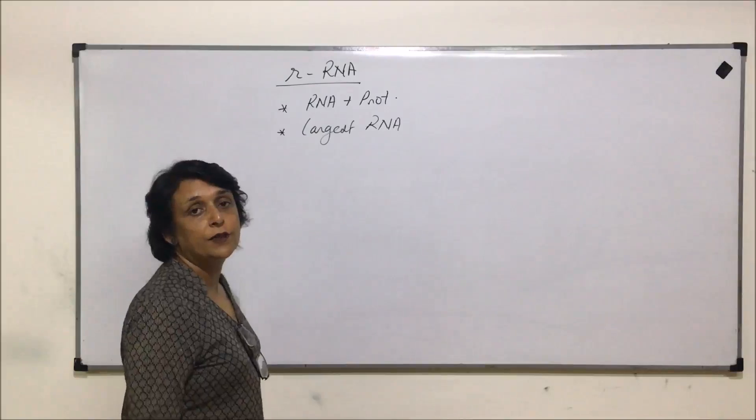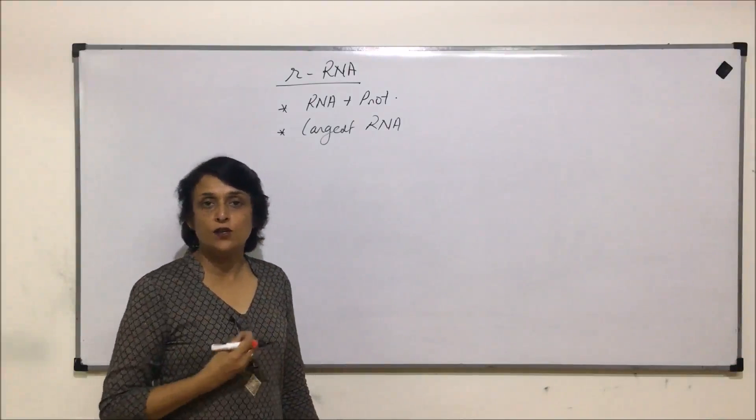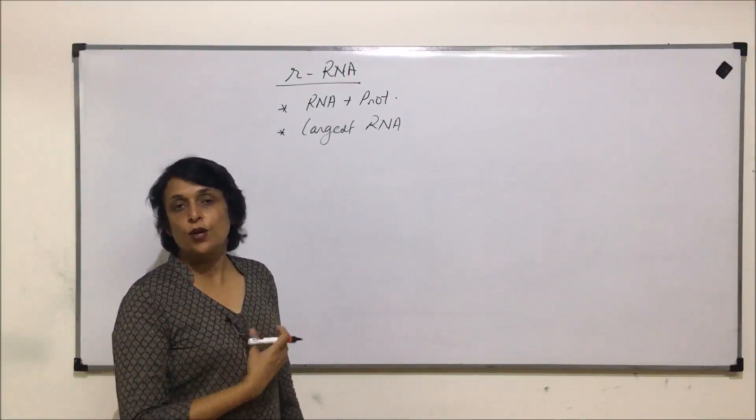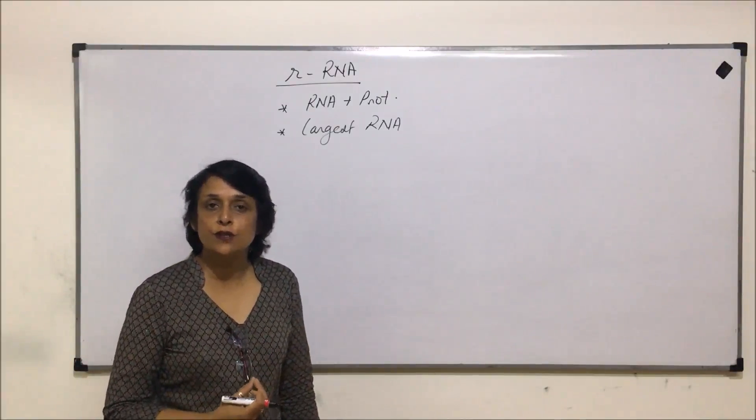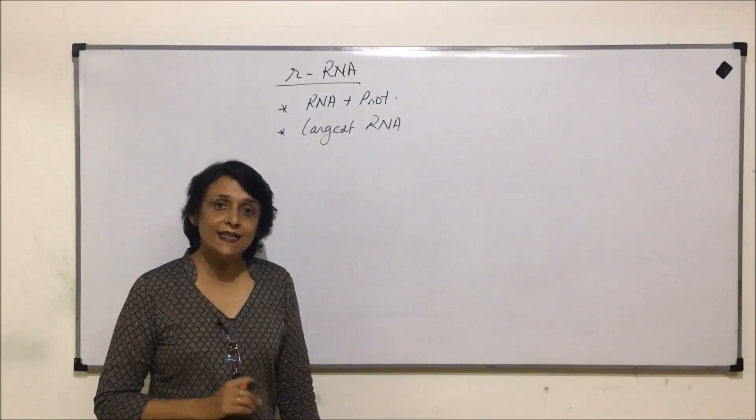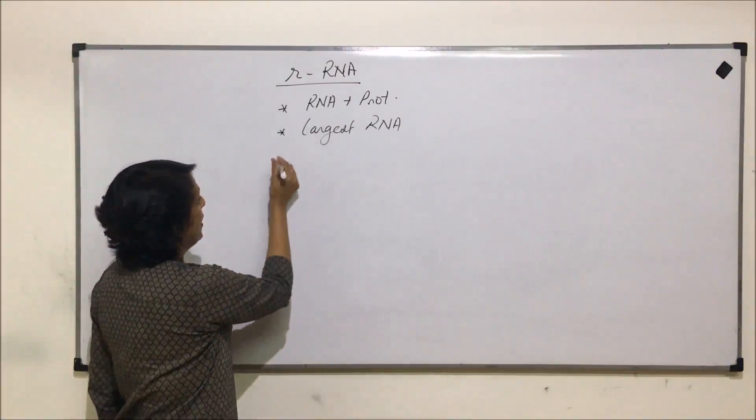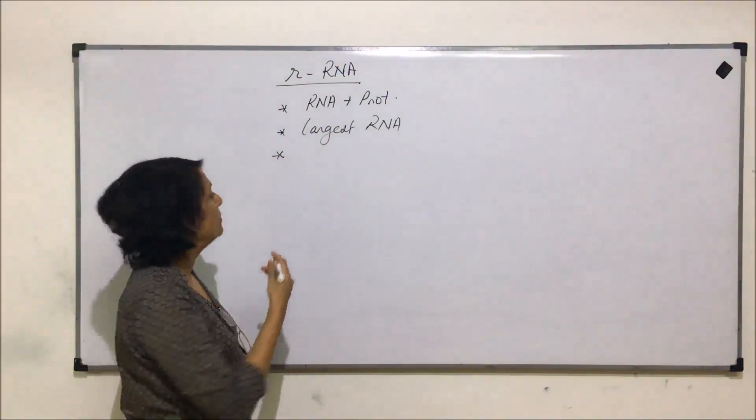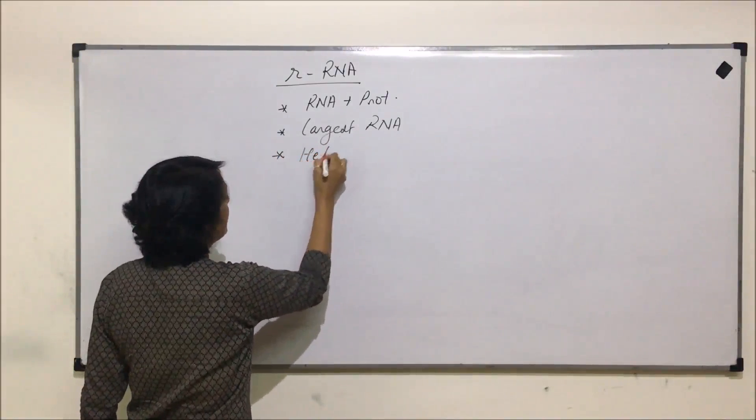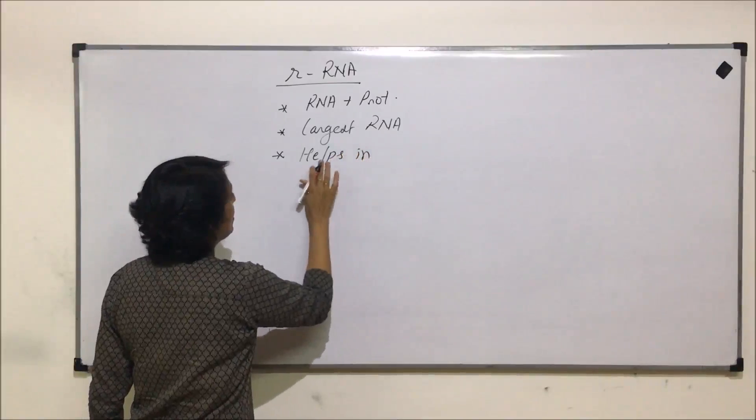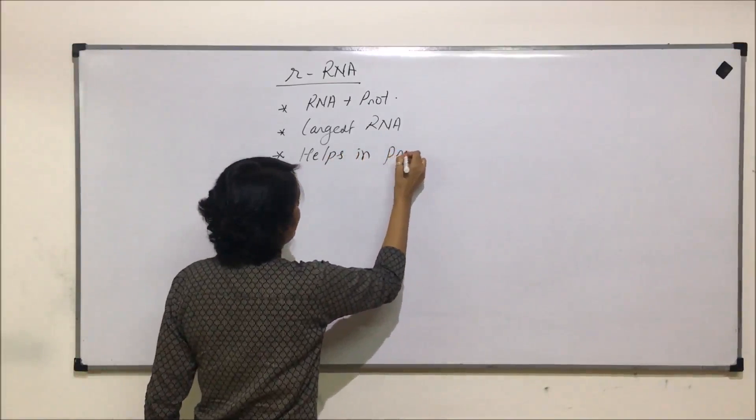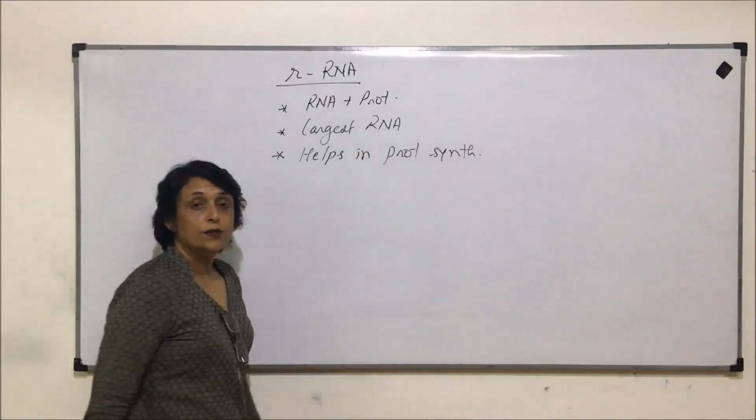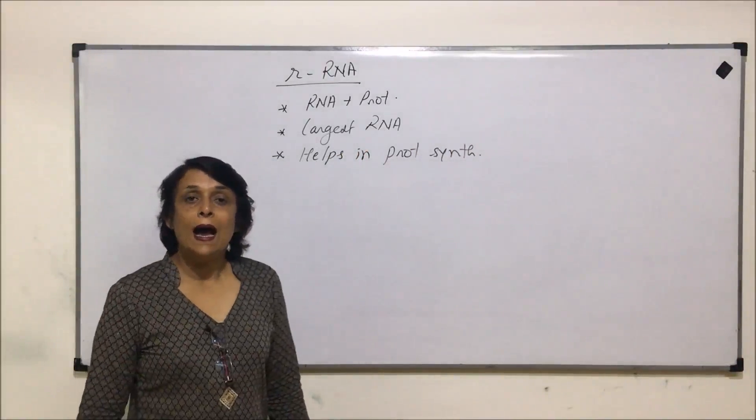How it is associated with proteins and what exactly is the structure of this rRNA is not clearly understood. Here we don't have any structure to discuss as we did in case of mRNA and tRNA. Because it is associated with ribosomes and proteins, it helps in protein synthesis. This is what we know about rRNA.